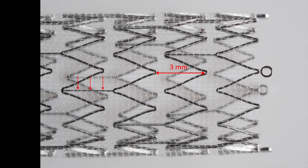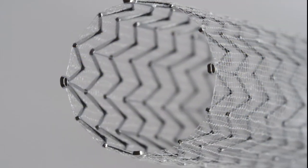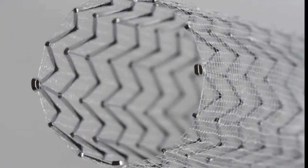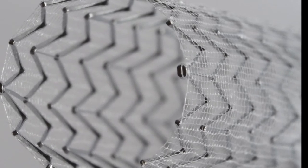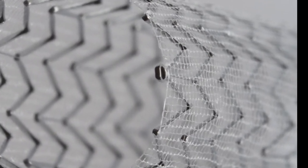The stent is made up of nitinol struts spaced 3 mm apart and joined together at various points on the circumference. SeaGuard is an open-cell stent covered by a polyethylene terephthalate or PET micro mesh sleeve sutured to both ends of the stent.